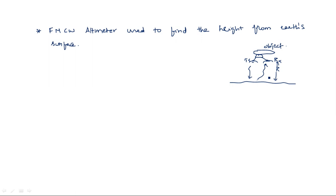We can call it range in the horizontal direction, but vertically we call it height from the earth's surface — especially when aeroplanes are moving in hill areas. FMCW radars are incorporated in aeroplanes to calculate the height from the earth's surface during hill travel. If the hill area is very high, the aeroplane must maintain a minimum height, going up when nearing a hill and coming down over normal surface. This is the main application of FMCW altimeters.